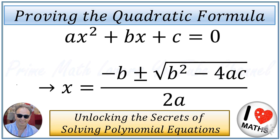Hello fellow math lovers. In this video we will unveil the proof of the quadratic equation formula, famously known as the Delta formula. It says that if we have a quadratic equation as ax squared plus bx plus c is equal to zero,